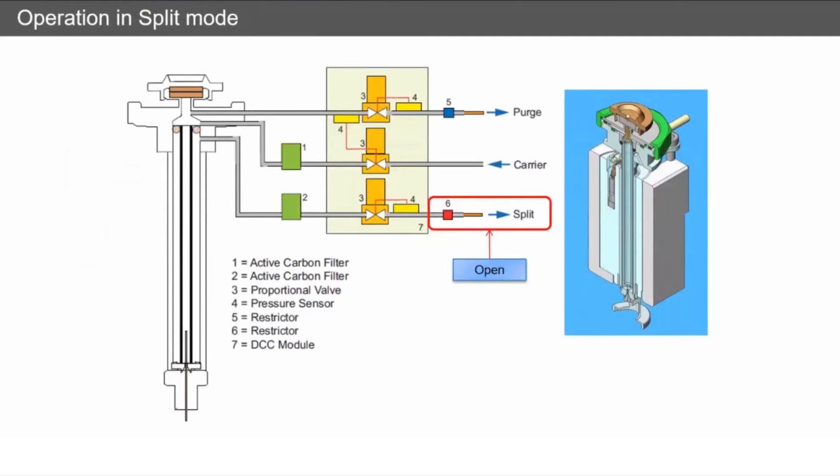Split mode. How does this work? Well, essentially it works the same way as the splitless, but the split valve is open. So our carrier flow is coming in, a portion of this is going down onto the separation column, but a large portion is going out through a split. So as our solvent expands and our compounds evaporate, a proportion of these will now be traveling out the split vent as well as going onto the column.